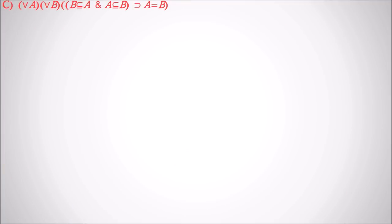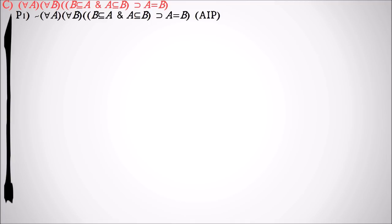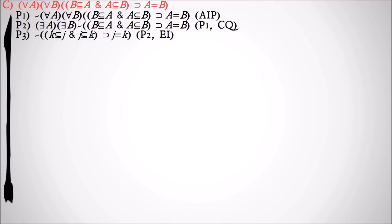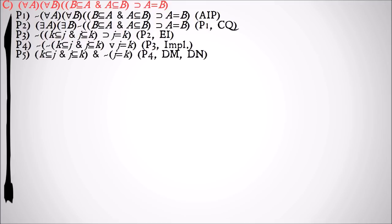And now finally, if two classes are subclasses of each other, then they are identical to each other. We're going to deny that statement to start with assumed indirect proof. We'll do a double change of quantifier and then existentially instantiate both. We'll instantiate them to K and J. We use implication to turn that into disjunction, De Morgan's Law and double negation to make that a conjunction.